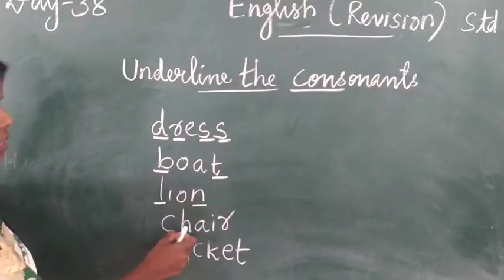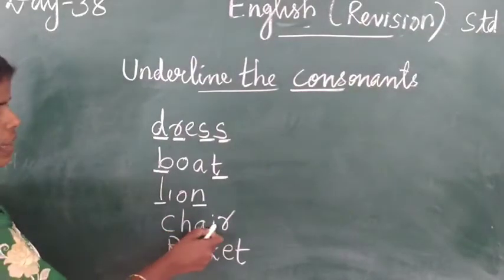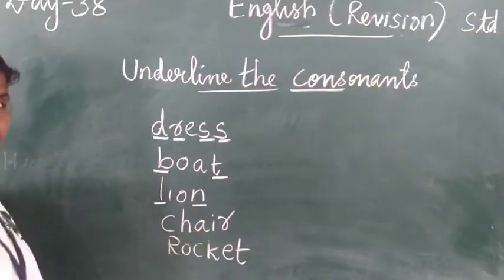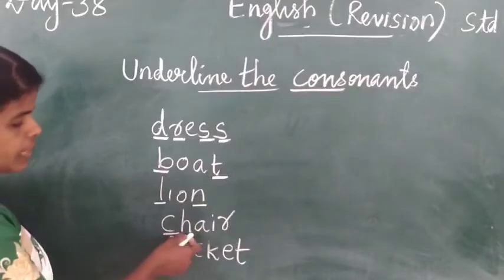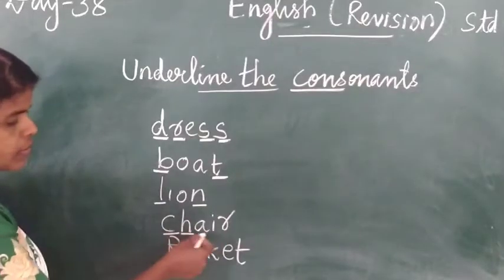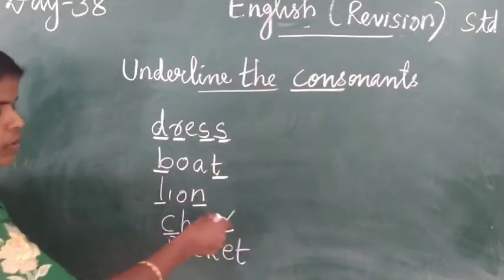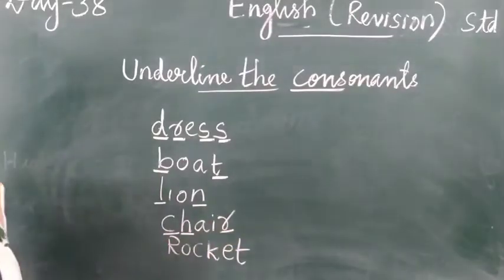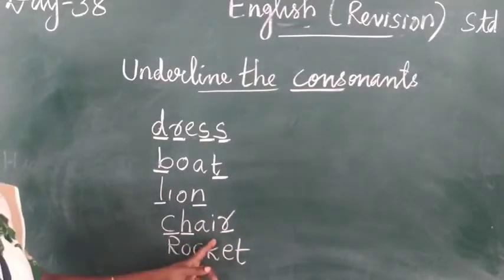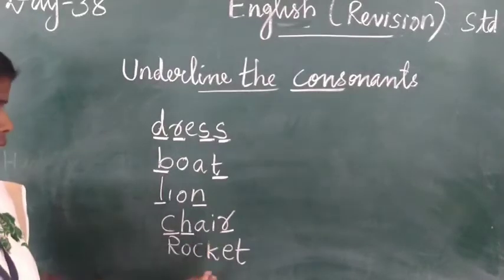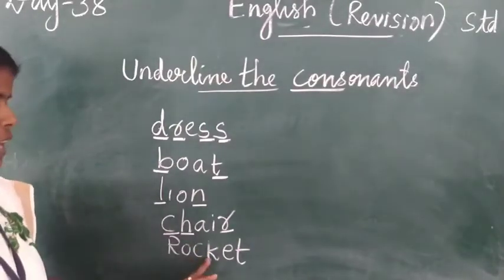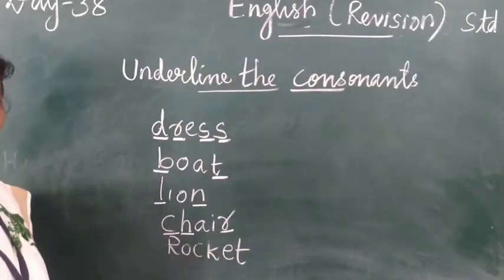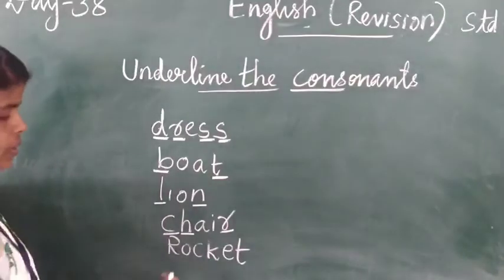Next, lion: L-I-O-N. L and N are consonants; I and O are vowels. Next is chair: C-H-A-I-R. C, H, R are consonants; A and I are vowels. Okay, next last one, rocket: R-O-C-K-E-T.